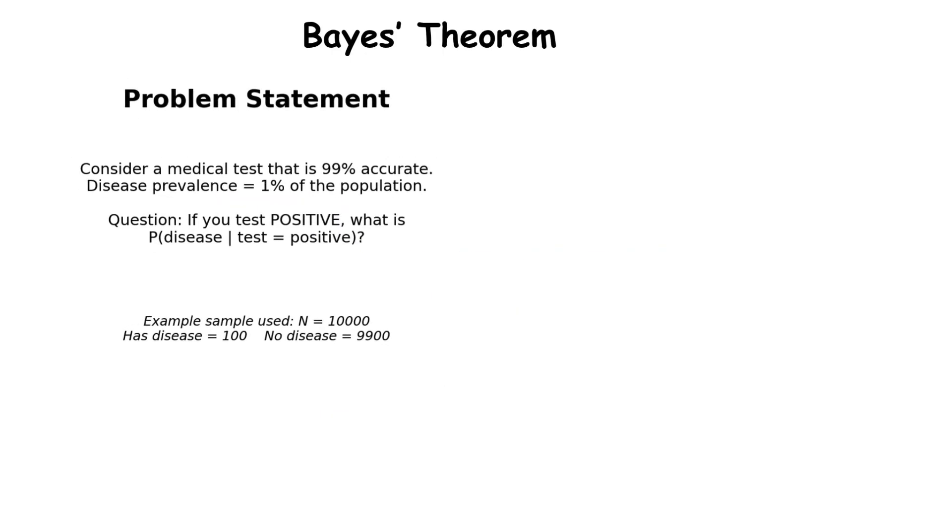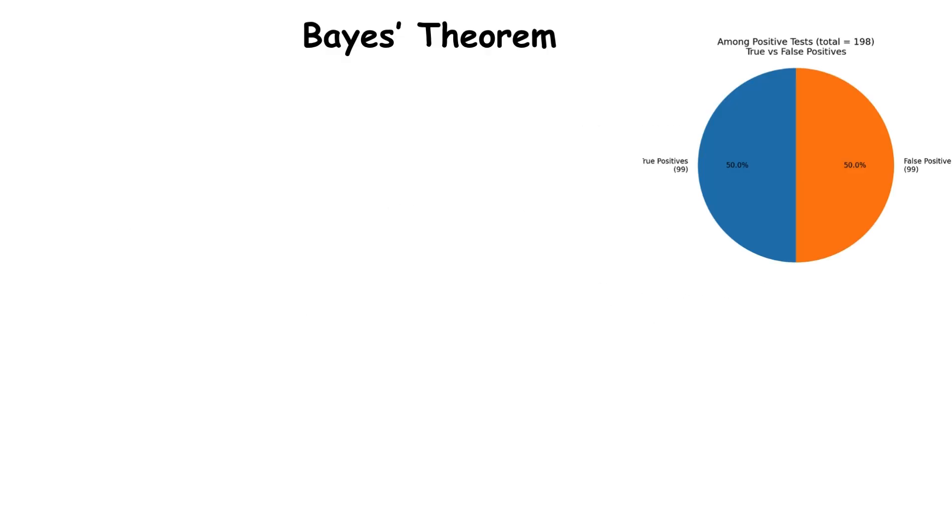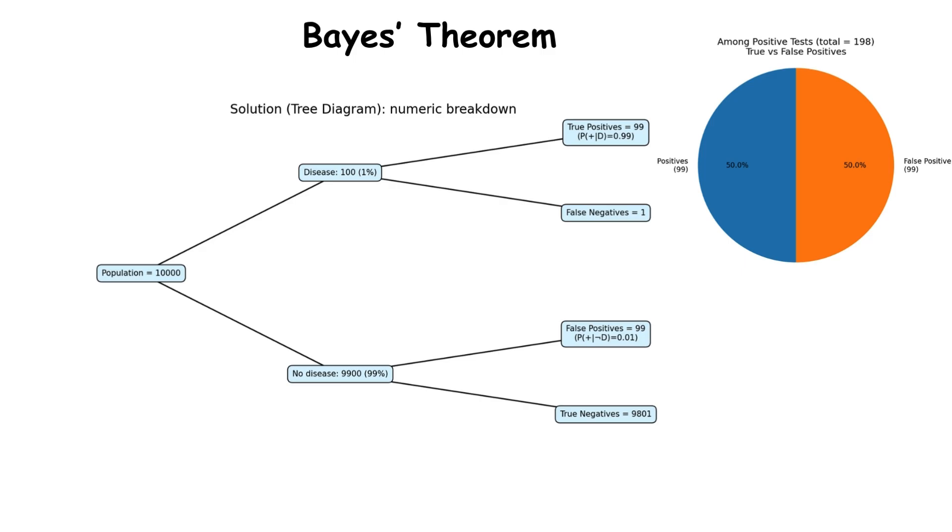Consider a medical test that is 99% accurate for a disease that affects 1% of the population. If you test positive, Bayes' theorem reveals that you actually have only about a 50% chance of having the disease, not 99%. This counterintuitive result occurs because false positives are more common than true positives when the disease is rare.